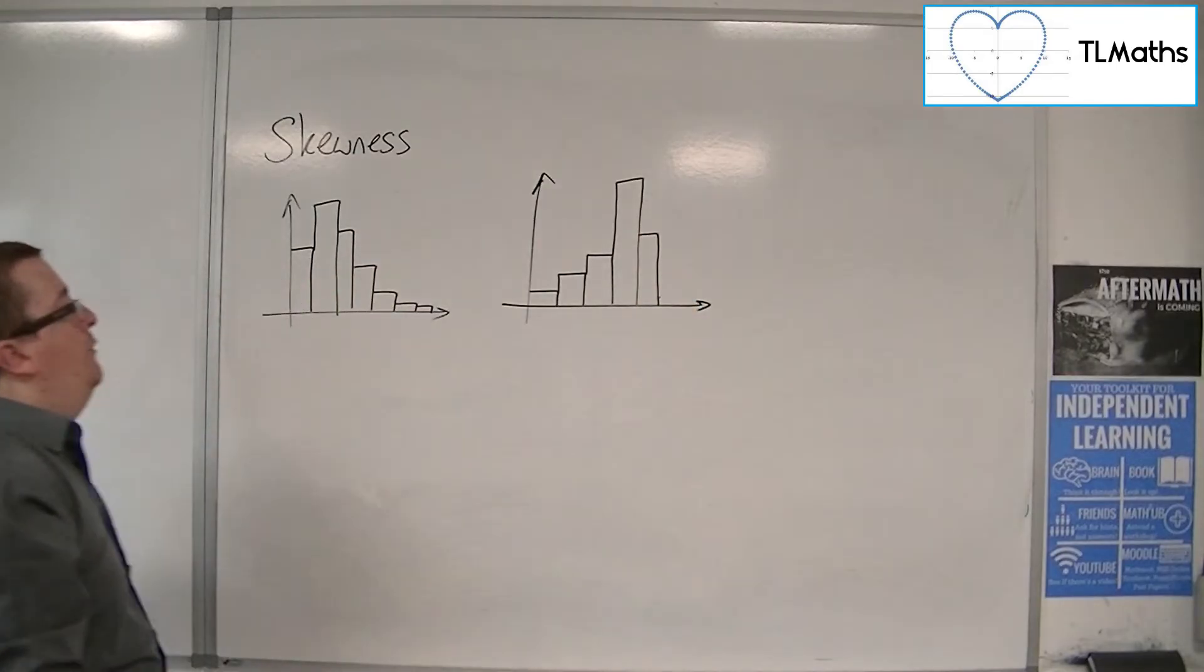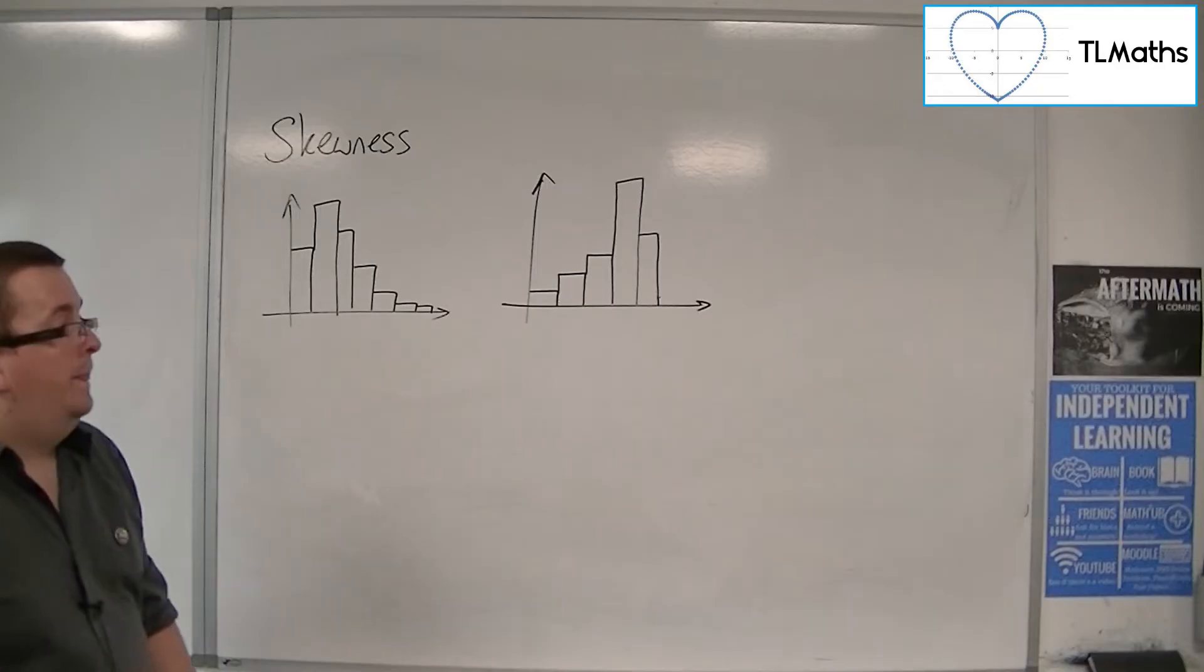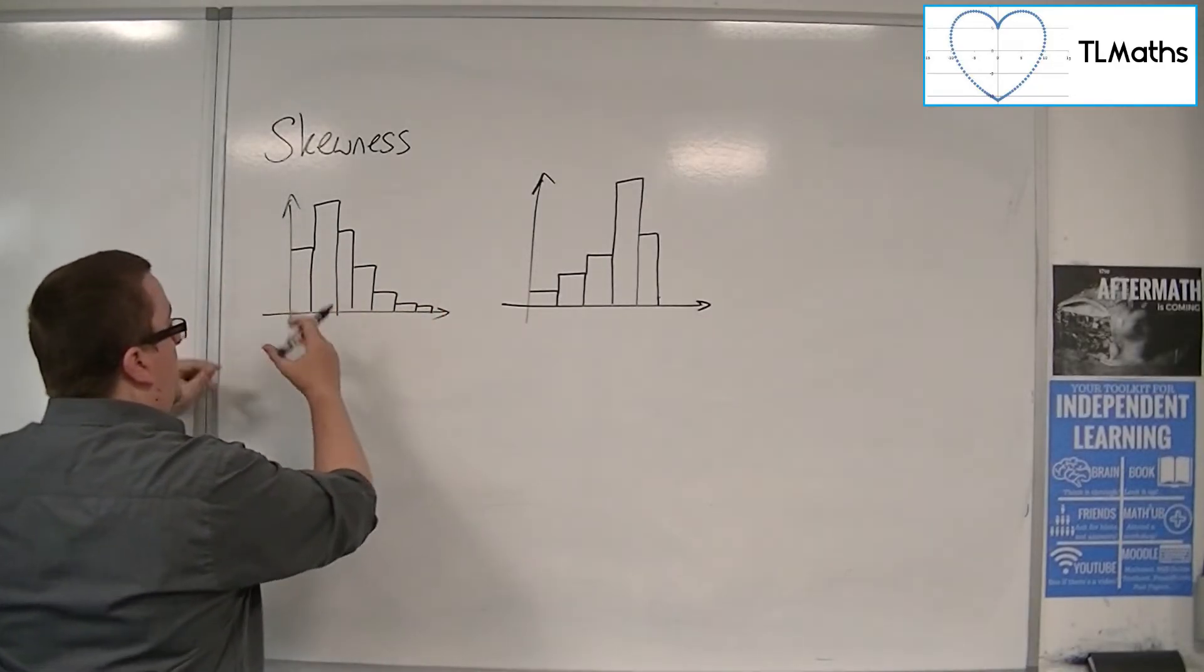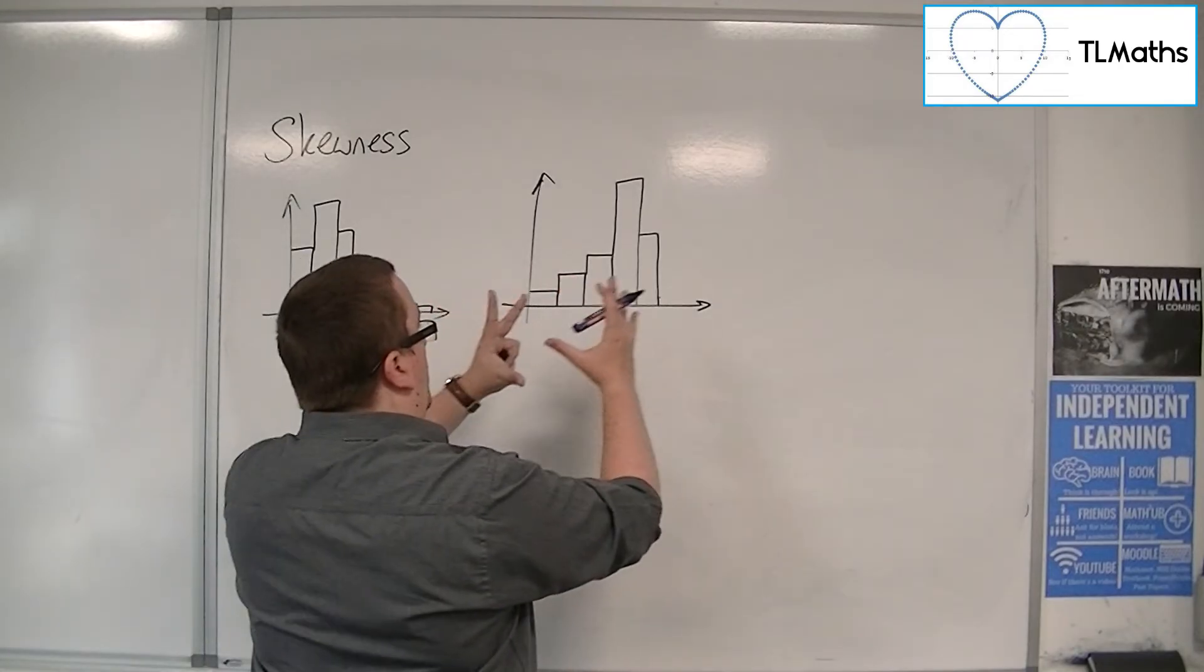There were my two sets of data. Here, in this case you can see that it is leaning to the left, and in this case it's leaning towards the right.